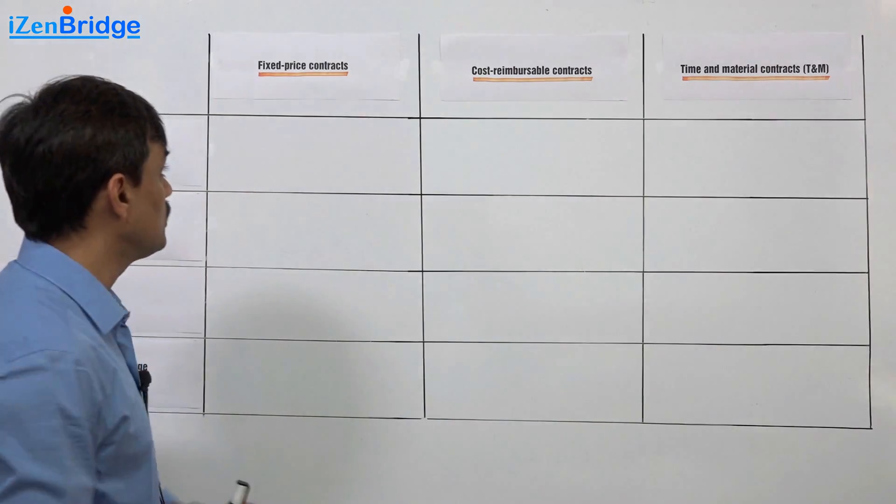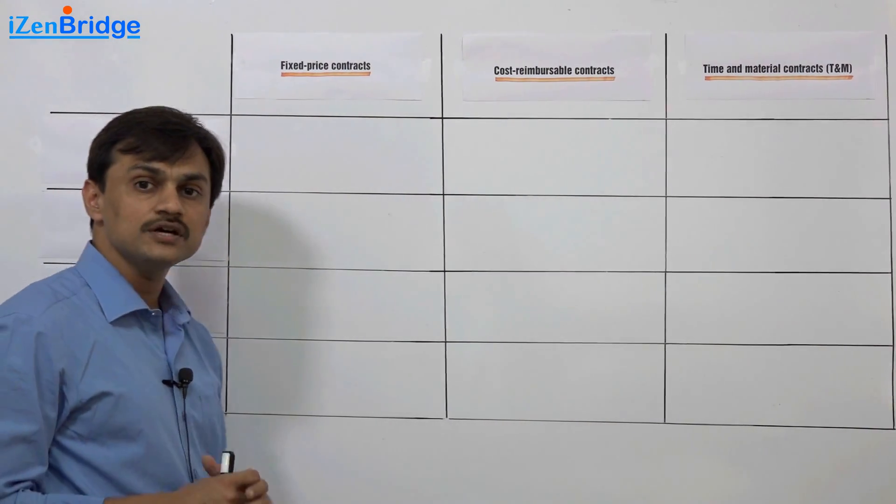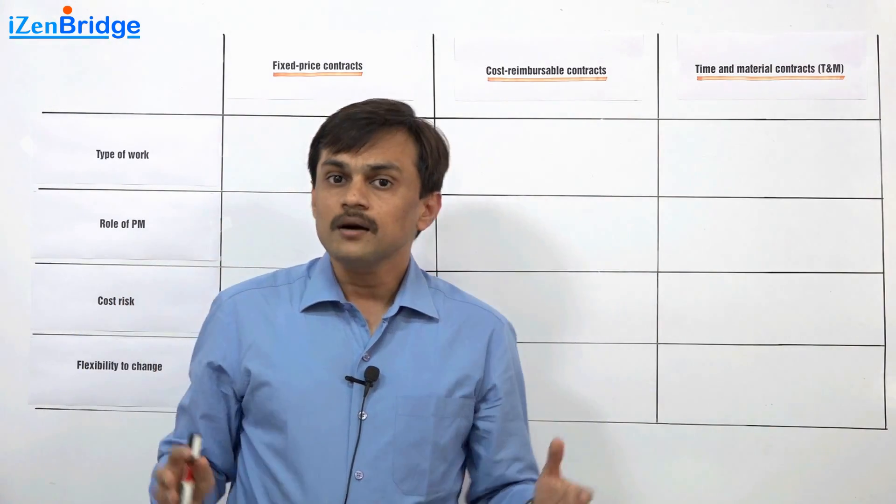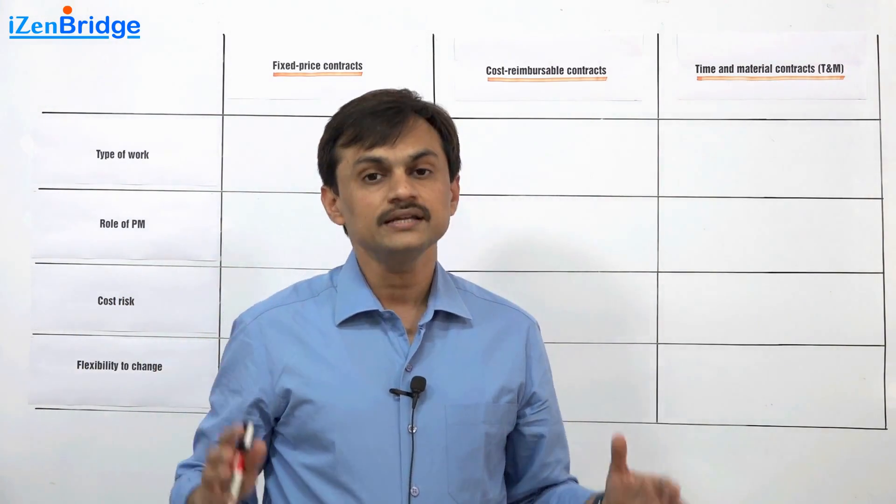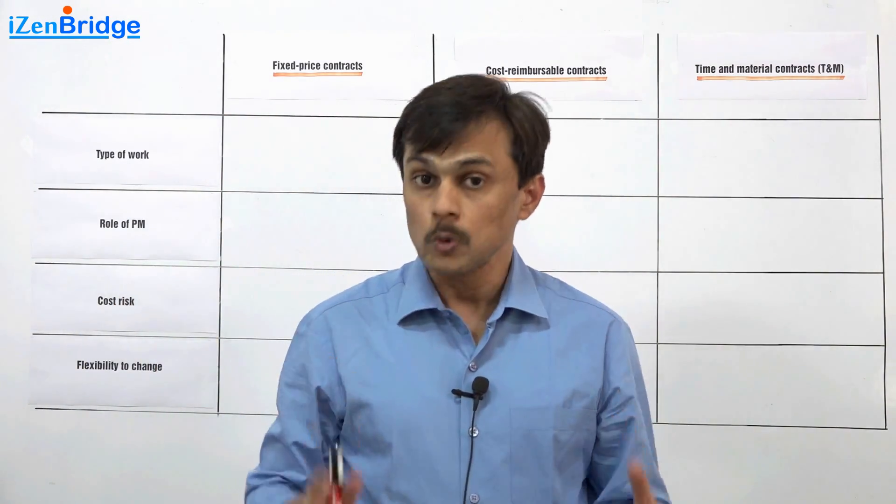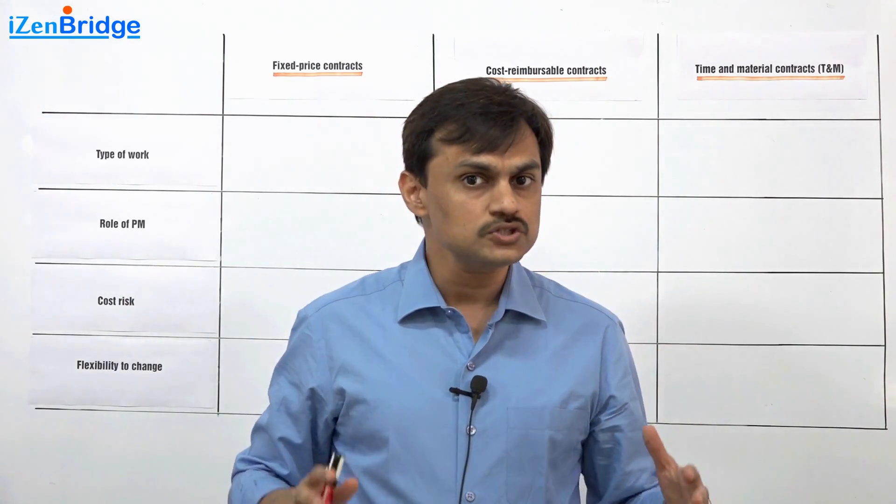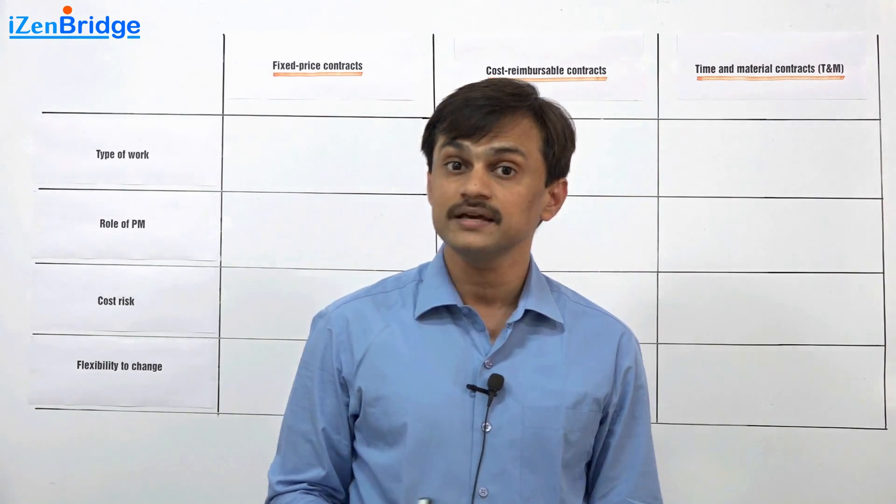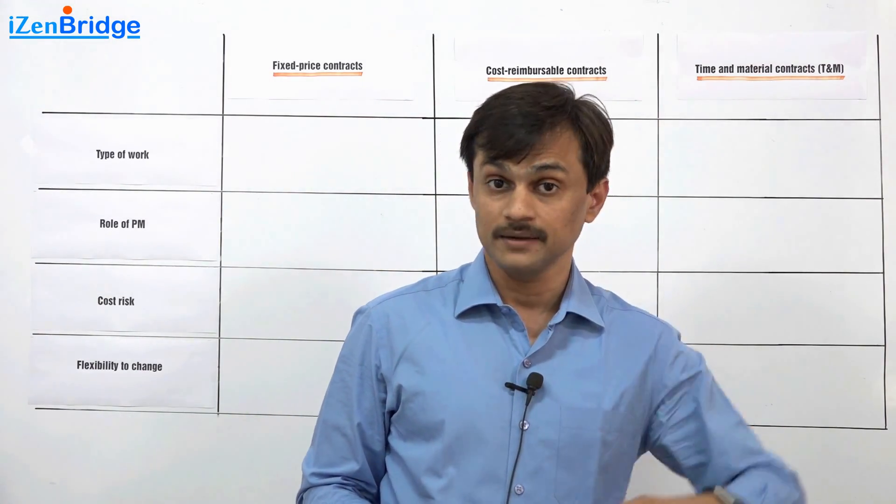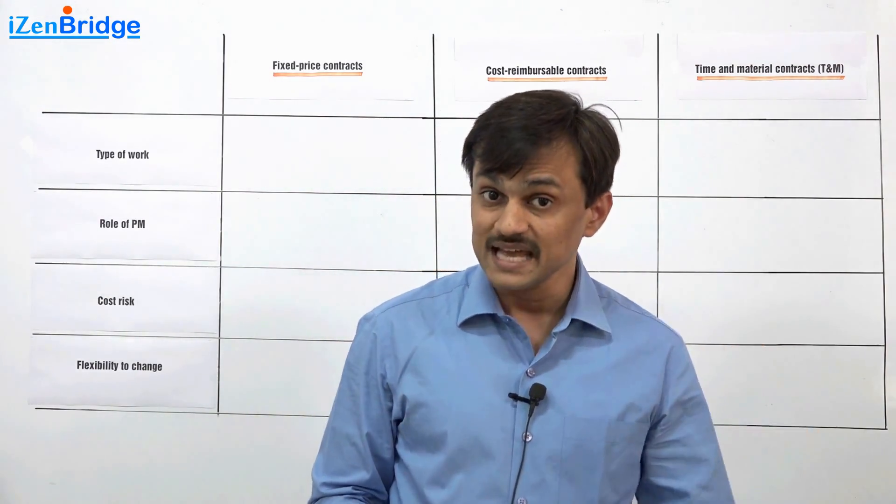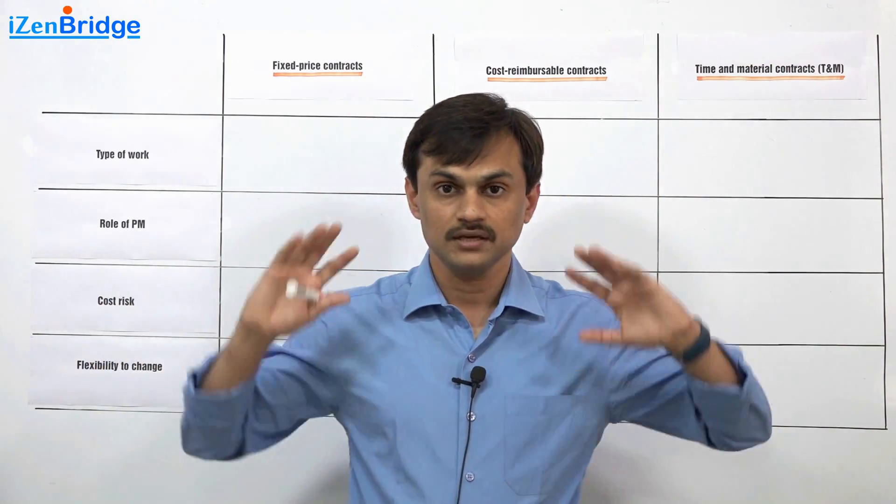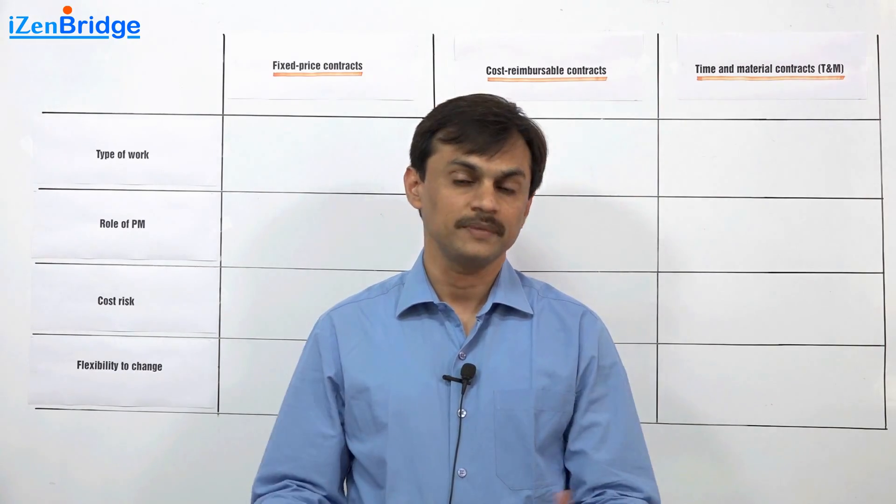So let us look at type of work. Fixed price contract. You can commit for a fixed price when you really have an idea of the scope. Without knowing scope, if somebody commits for a fixed price, then the project is going to fail because someday either buyer will feel he committed wrong or the seller will feel that it was a wrong estimation and it is not making sense.